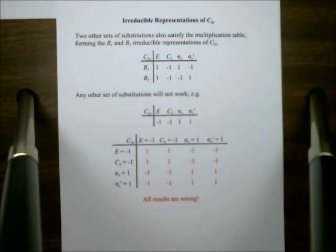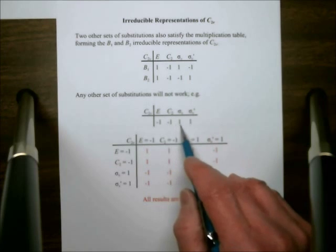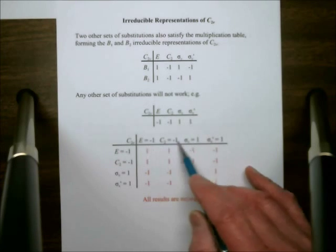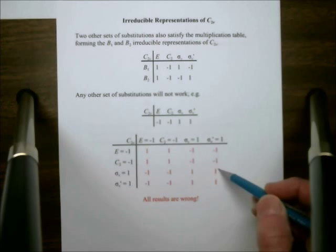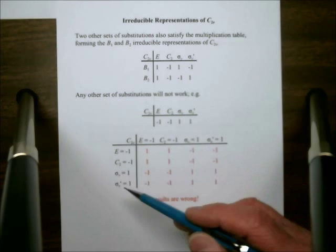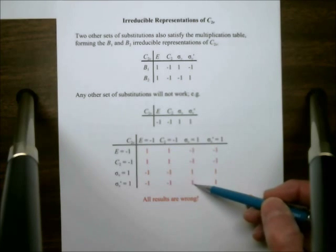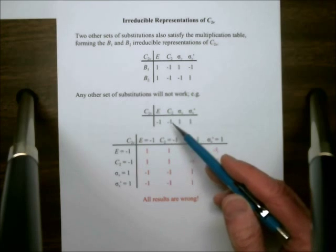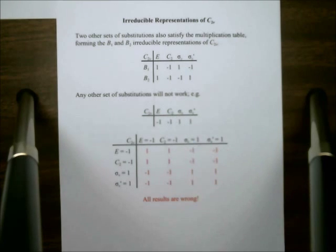If we tried any other set of substitutions, it will not work. For example, I might see these first four and say, let me just make the substitutions minus 1 minus 1, 1 and 1. Well, if you do that, you get a completely wrong set of results. For example, sigma v times sigma v prime, here I would get a 1. I'm supposed to get a minus 1 because that's the substitution I've made for C2. So this is not an irreducible representation. It is not a representation, in fact, in C2v.